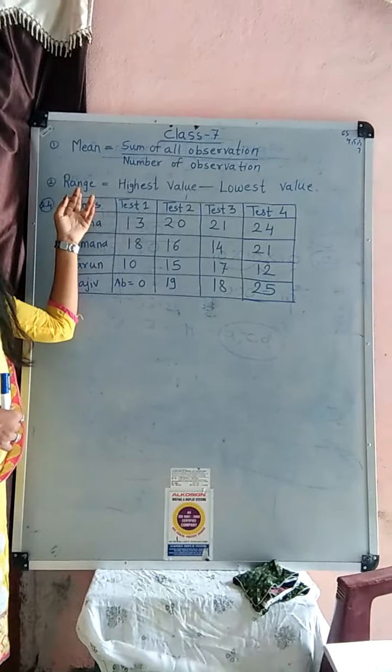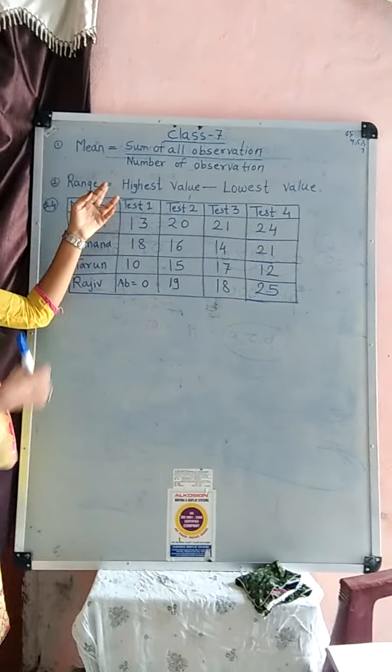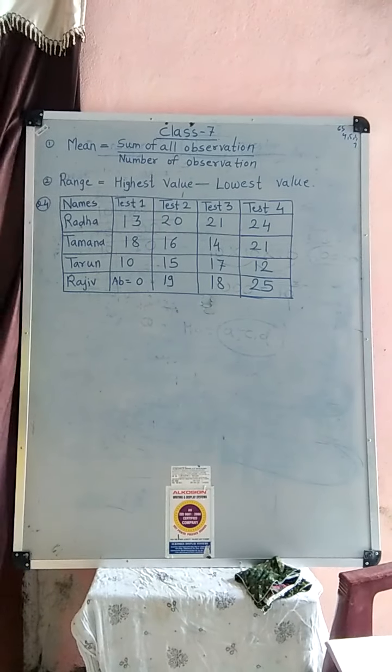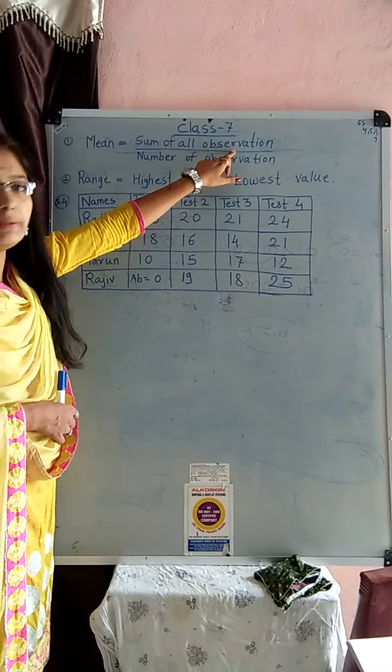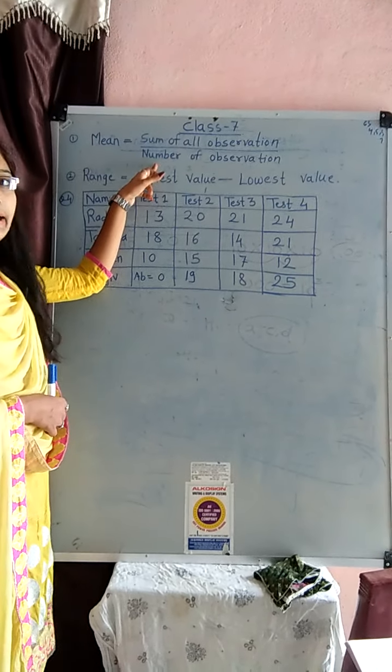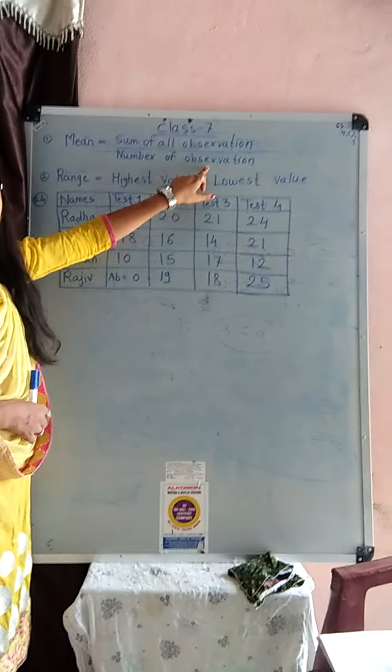Mean and range, this is new for you. Look at here the structure of mean. Mean is equal to sum of all observation divided by number of observation.